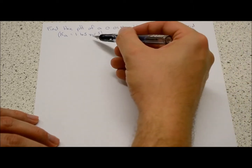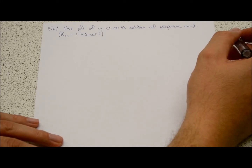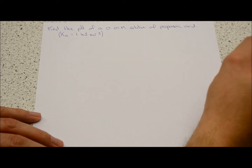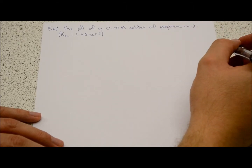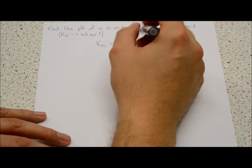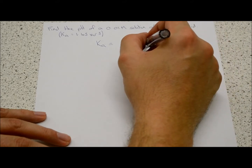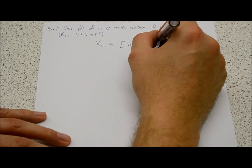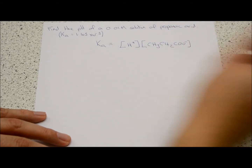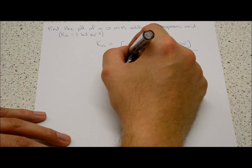Now it gets a little bit trickier — we've been given a dissociation constant, which means not all of the acidic protons on the propanoic acid molecule dissociate. We have to figure out how many go into solution. Just like equilibrium calculations, Ka equals the concentration of products — hydrogen ions and propanoate ions — divided by the concentration of propanoic acid.